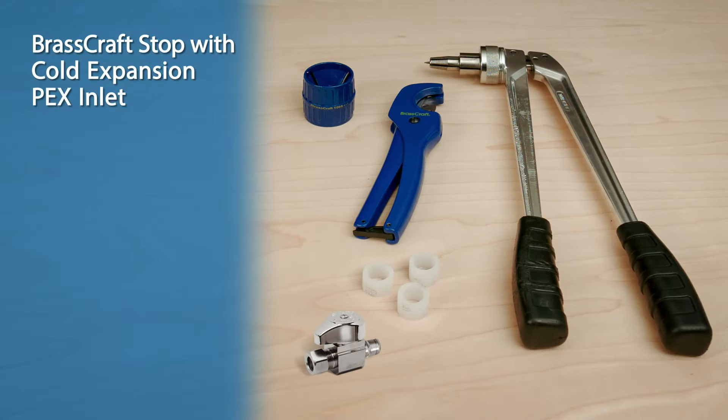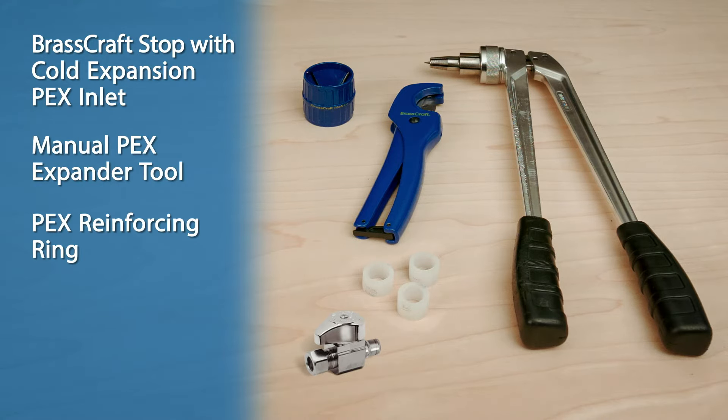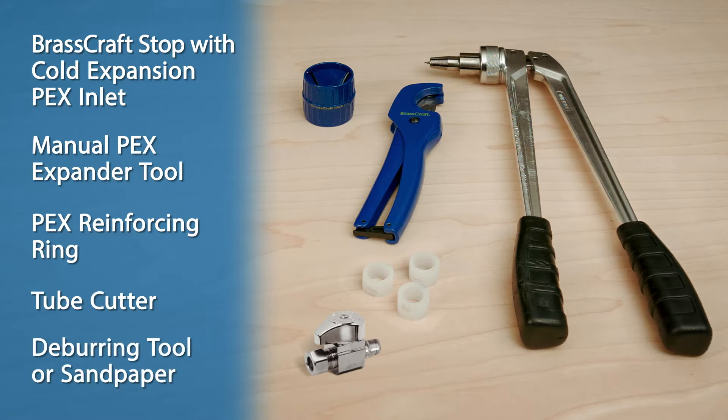You'll need a BrassCraft stop with a cold expansion PEX inlet, a manual PEX expander tool, a PEX reinforcing ring, a tube cutter, and a deburring tool or sandpaper.